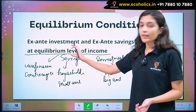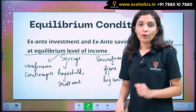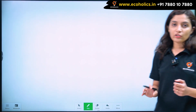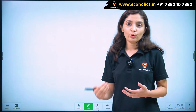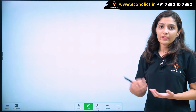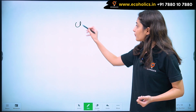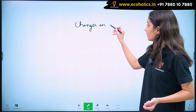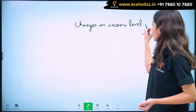We say that our ex-ante investment and our ex-ante savings are equal only at the equilibrium level of income. Our ex-ante savings and ex-ante investment are not necessarily always equal. If our ex-ante savings and ex-ante investment are not equal, then through changes in income level, these two can become equal.